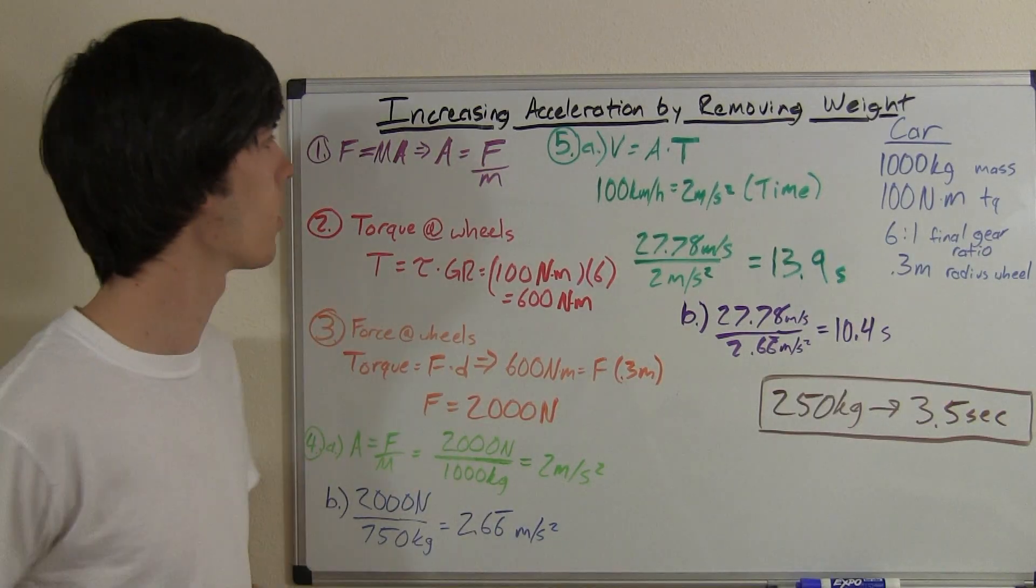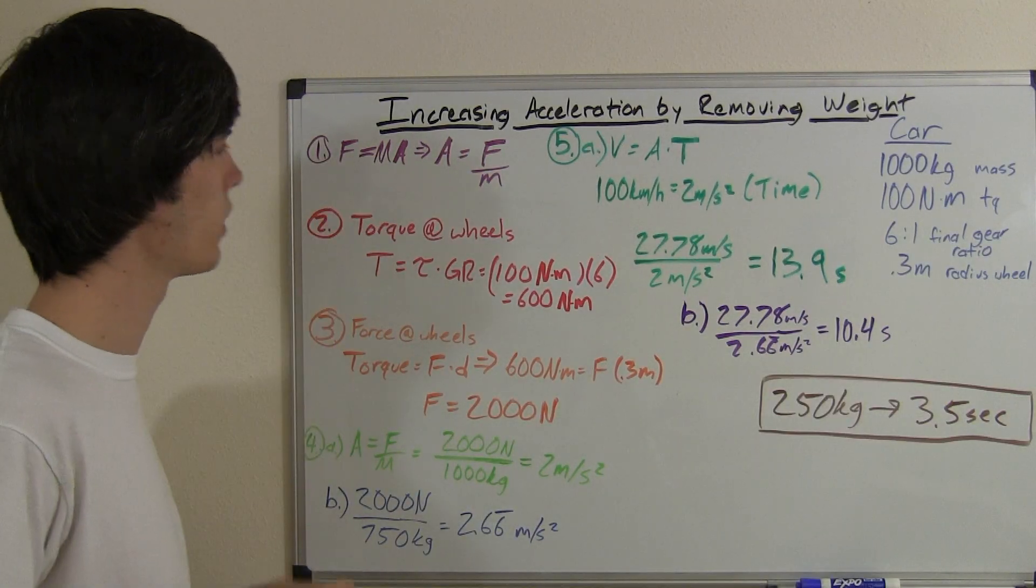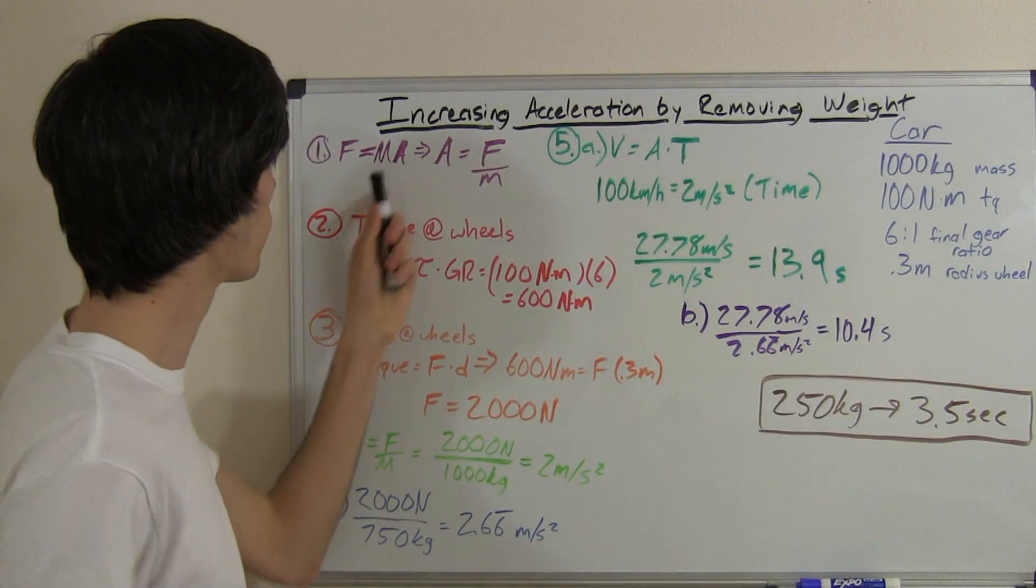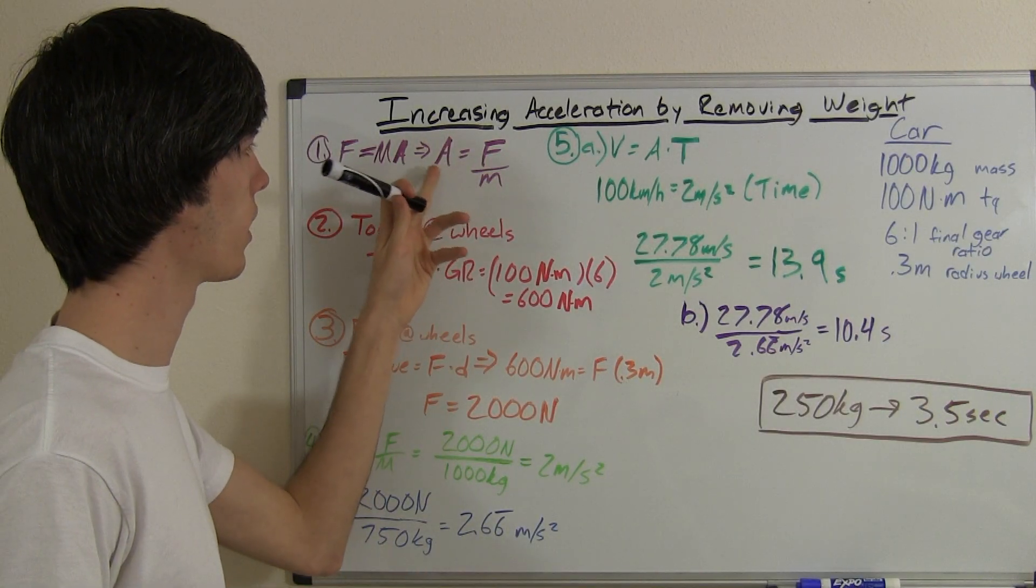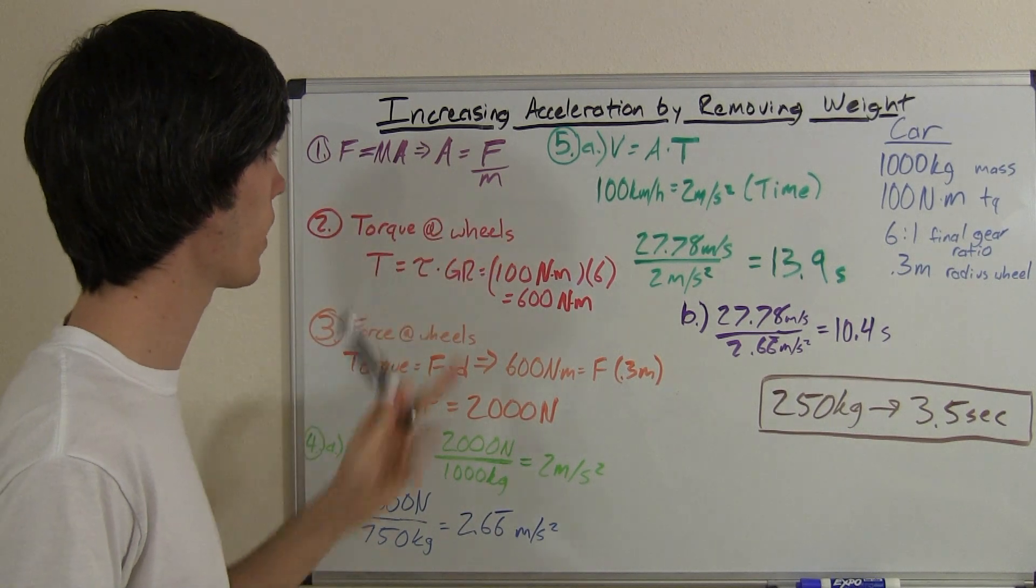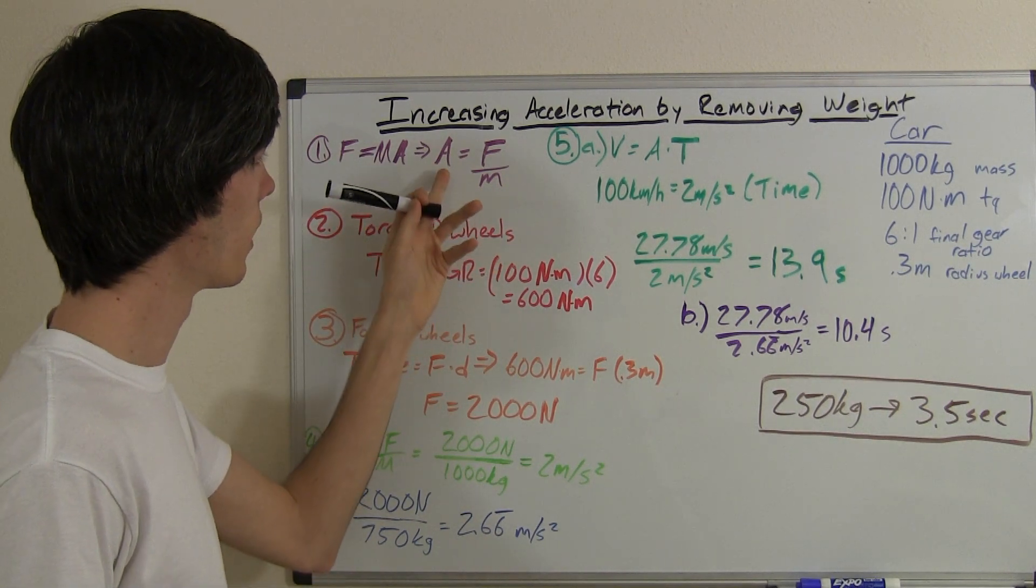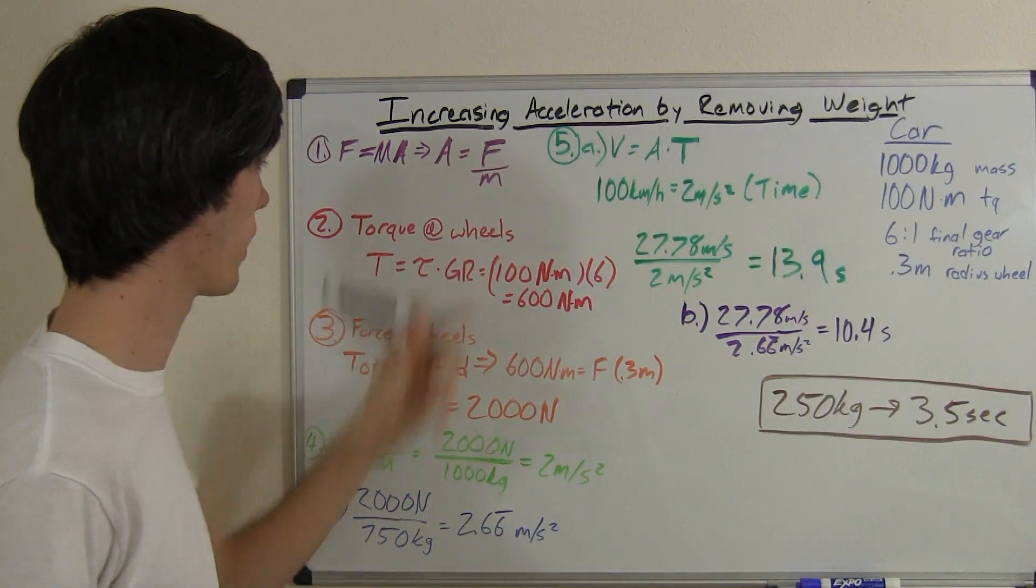Okay, so our friend Newton developed this theory, F equals ma. So force equals mass times acceleration. If we want to find out the change in acceleration with the change in mass, we've got to find acceleration. Acceleration equals force over mass.